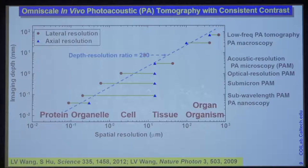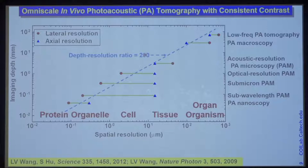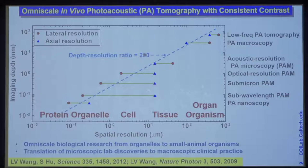This technology is probably the only omniscale imaging capability that allows you to provide in vivo imaging from organelles all the way to whole-body mammals or human organs with a consistent contrast, because we're imaging light absorption as the contrast mechanism, so you can provide molecular imaging. This can play a number of roles — for example, omniscale biological research from organelles all the way to organisms, and translation of microscopic lab discoveries to macroscopic clinical practice.